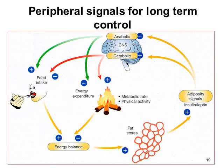There are a variety of peripheral signals for long-term energy balance and feeding control. Anabolic stimulation reduces energy expenditure by lowering metabolic rate and controlling physical activity, and stimulates food intake, increasing energy balance. As energy balance increases, fat stores are activated to store excess energy as fat, stimulating release of insulin and leptin. These adiposity signals then have a negative feedback loop on anabolic stimuli and a positive feedback loop on catabolic stimuli. Stimulating catabolic centres reduces food intake and increases metabolic and physical activity, decreasing energy balance, which then stimulates fat stores to break down.